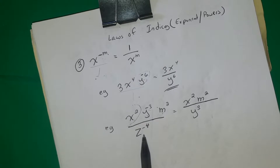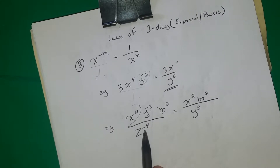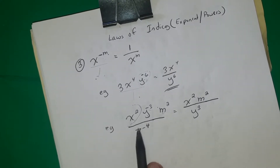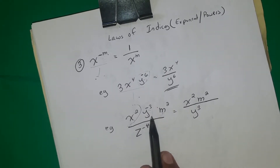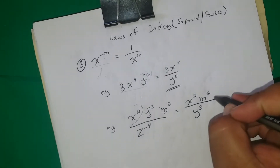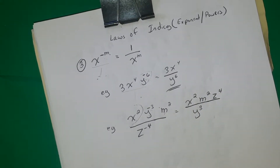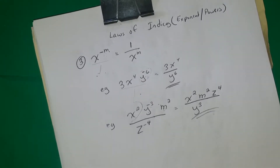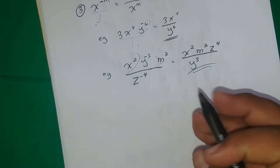Now let's look at the denominator. Do we need to switch z to the negative four? Yes, because the power is negative four. Z to the negative four is in the denominator, so we take it to the numerator, which gives us z to the fourth — now positive. And that is our complete answer for Example 2.